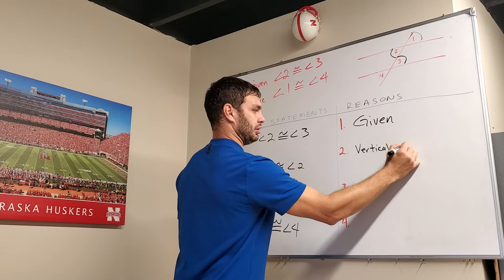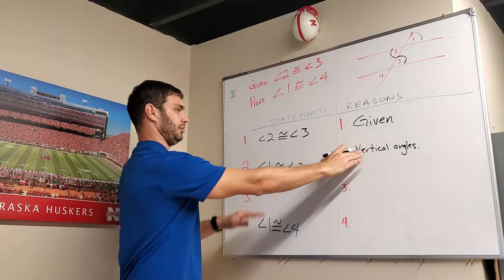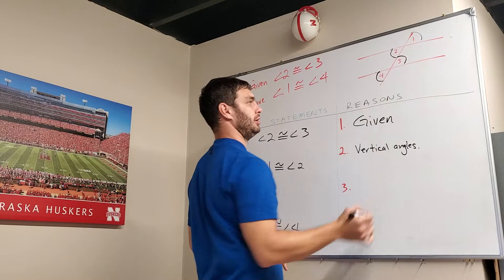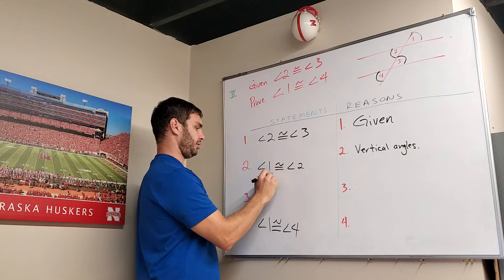And then let's just double check, see if there's any other vertical angles on there, because we can always use the same reason for more than one statement. And I am seeing that 3 and 4 are also vertical angles. I'm going to say in the same statement up here, angle 3 is congruent to angle 4, and that's for the same reason.